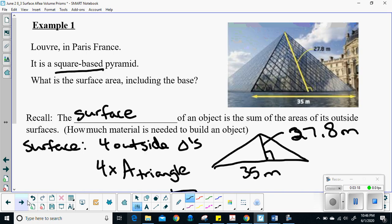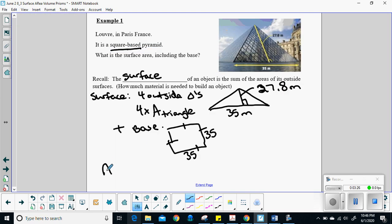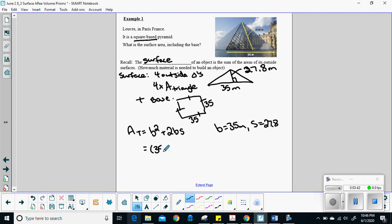So area total is going to be B squared plus 2BS. So B is going to be my 35 meters. S is going to be the height of that triangle, so that's my 27.8. Plug them in and away we go. So 35 squared plus 2 times 35 times 27.8. Please watch your order of operations.